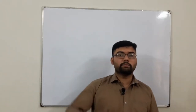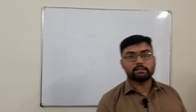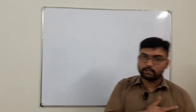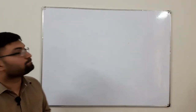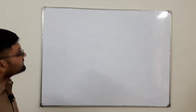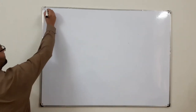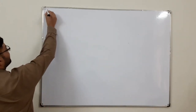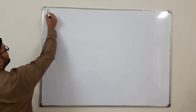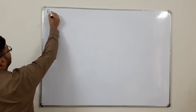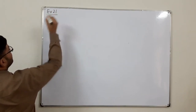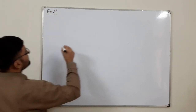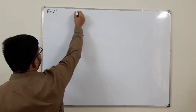Bismillah ar-Rahman ar-Rahim. Assalamu alaikum. Welcome, and today we have the first example. Following the order of the book, we have example 2.1 in which x of n is given and the impulse response is given.